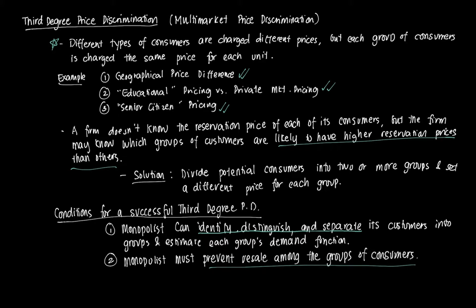As in other forms of price discrimination, the multi-market price difference is not a consequence of different costs of production. The cost of producing the same good does not change depending on which group it is produced for. The marginal cost of producing the good remains the same whether it's for a group with higher willingness to pay or a group with lower willingness to pay.